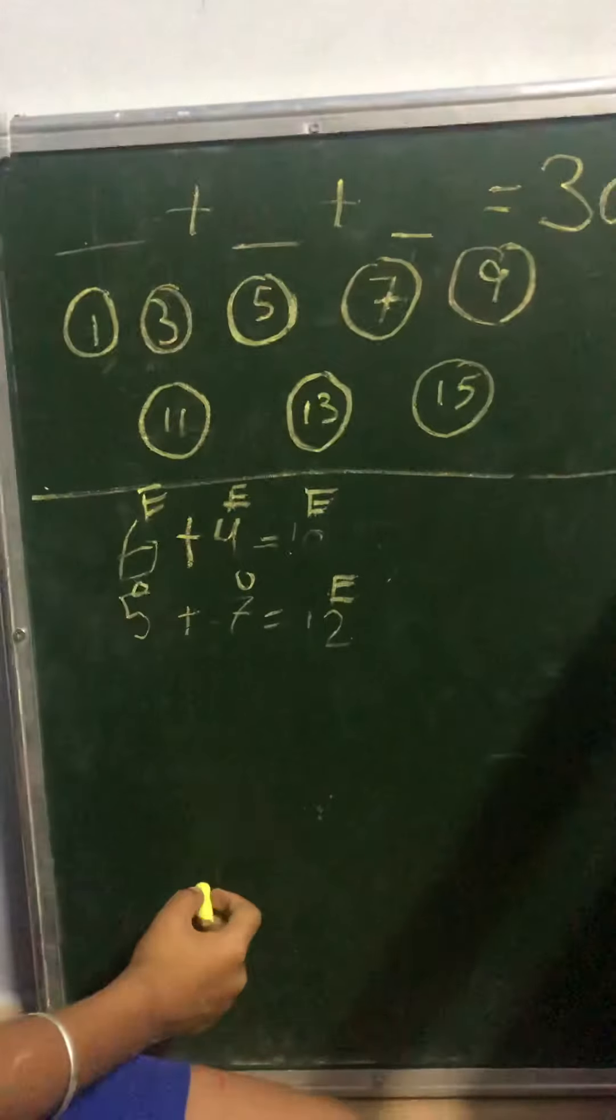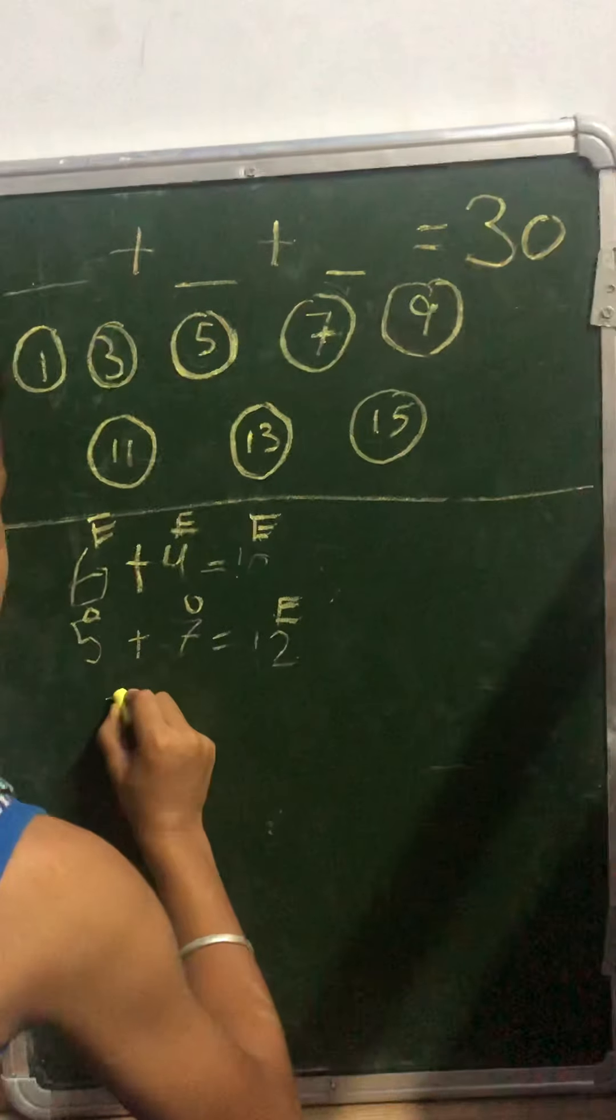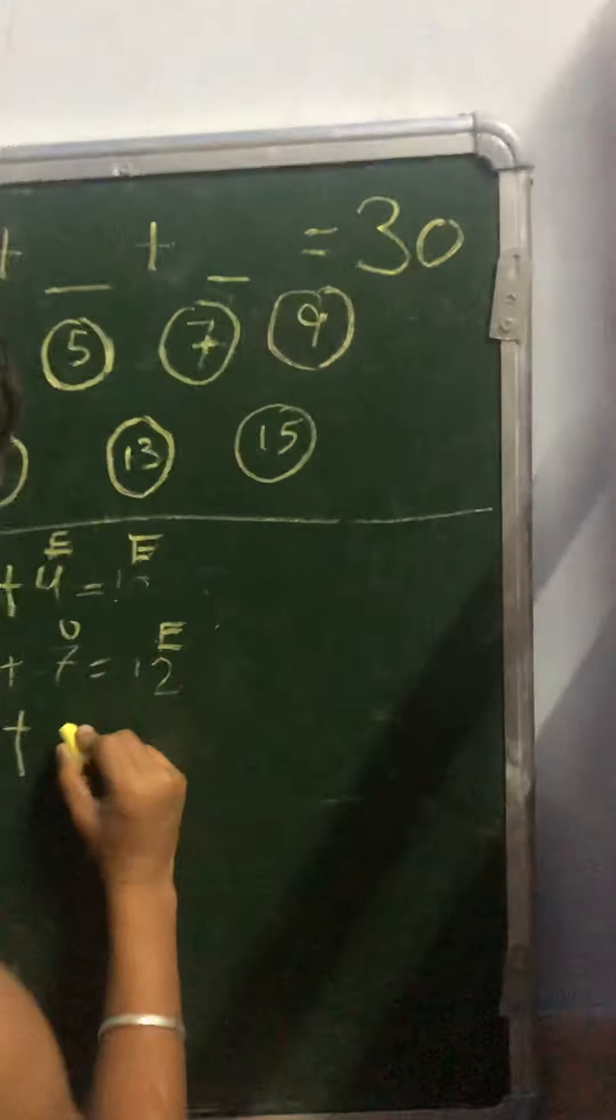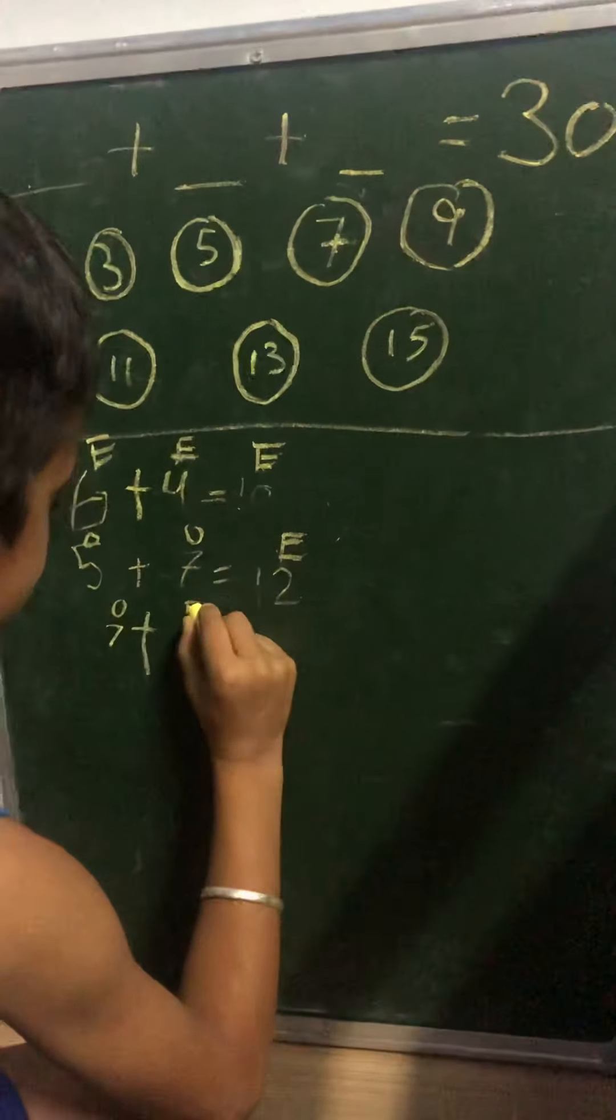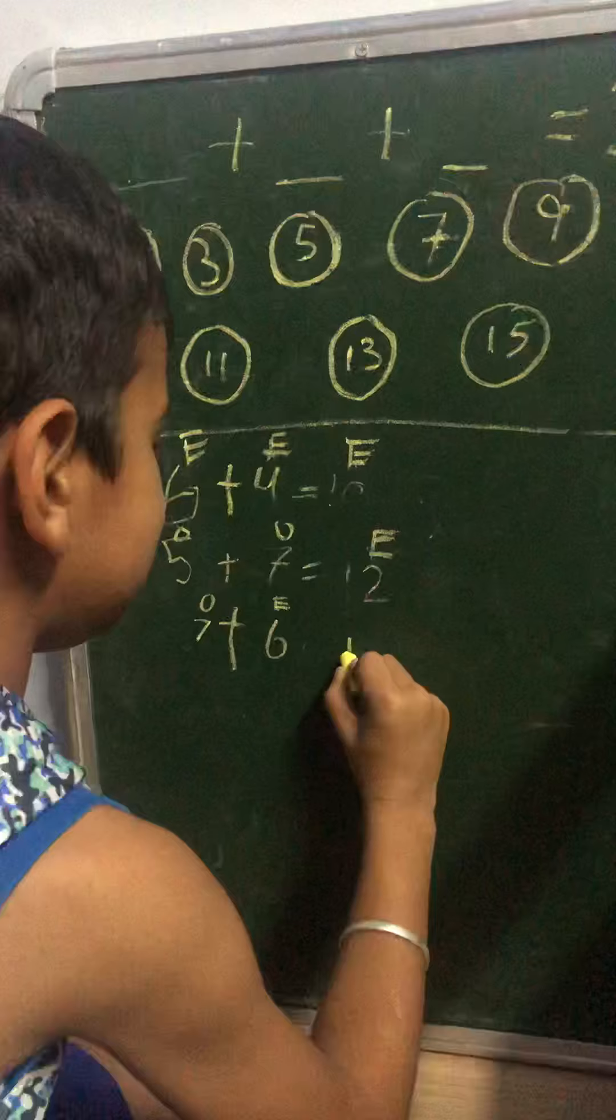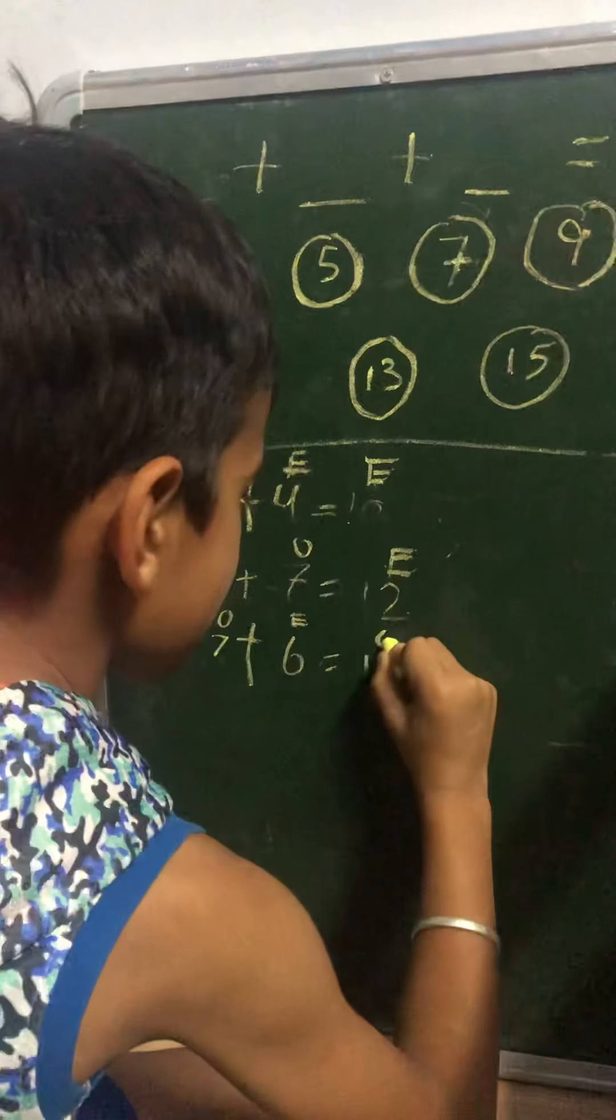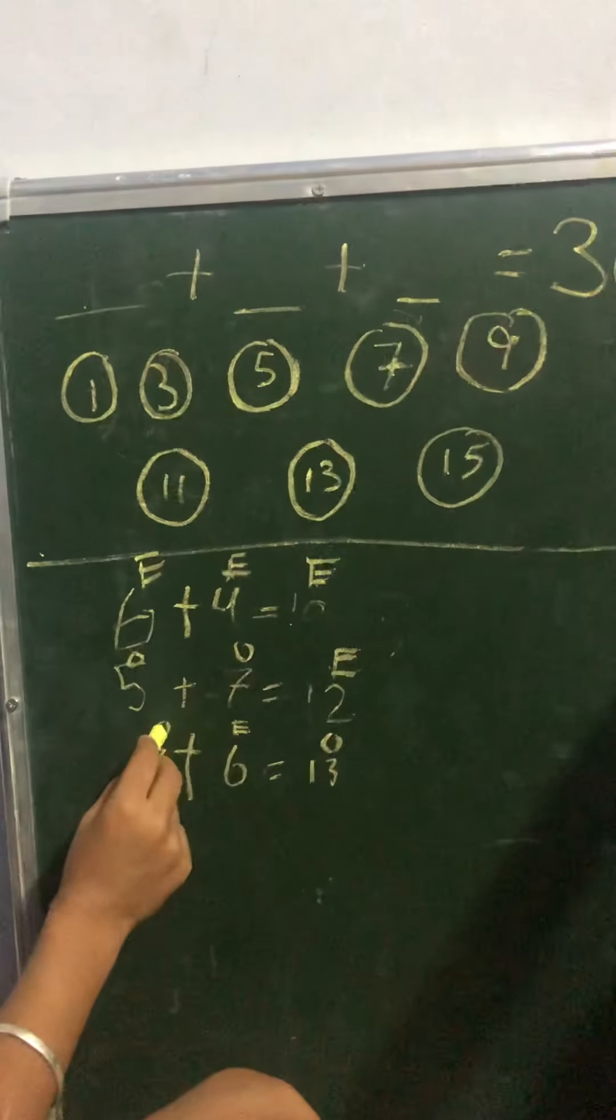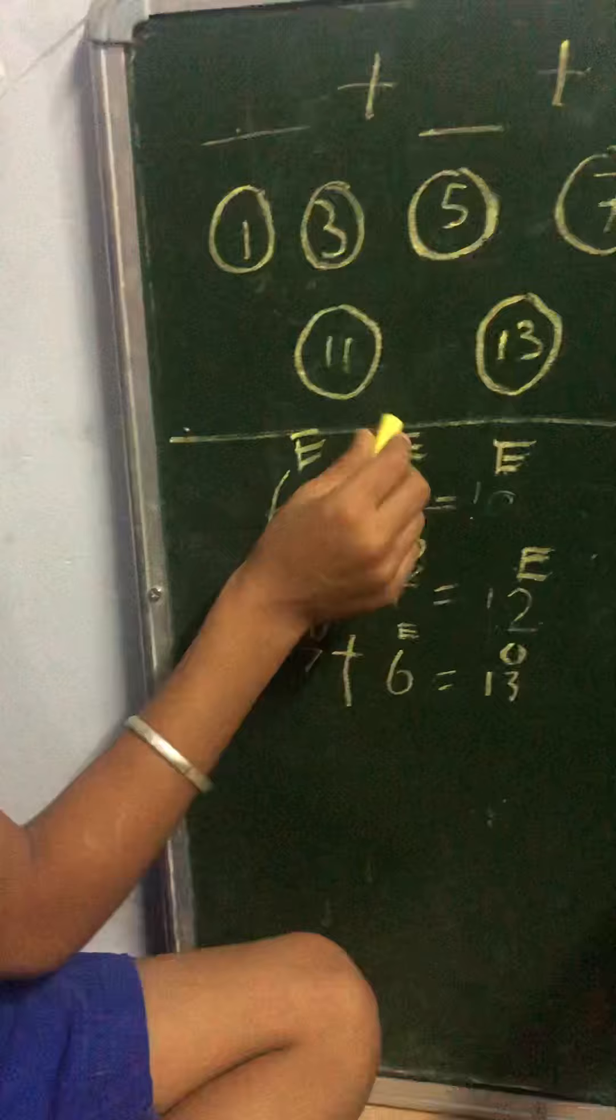How about if I take odd and even? Imagine, 7 is for O, which means odd, and 6 is for even, which means E. So 7 plus 6 is 13, and 13 is odd. So what did we learn? We learned that odd plus even is odd. Odd plus odd is even, and even plus even is even.